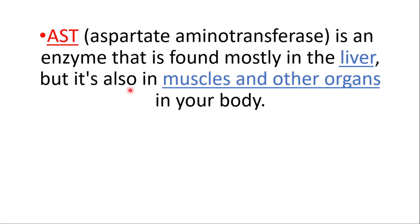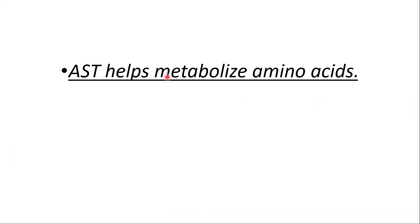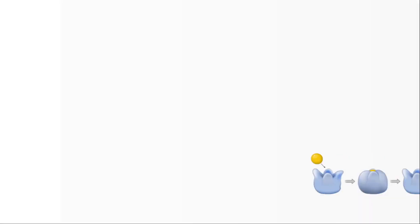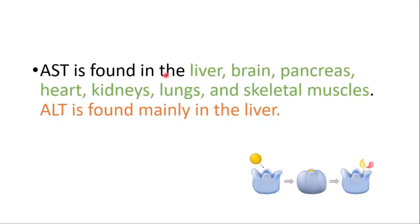AST is an enzyme found mostly in the liver, but also in muscles and other organs. It helps metabolize amino acids and is found in the liver, brain, pancreas, heart, kidneys, lungs, and skeletal muscles. Another enzyme called ALT is mostly found in the liver.